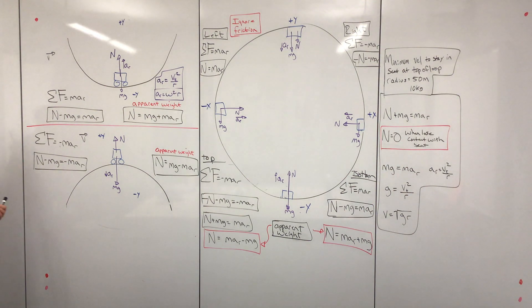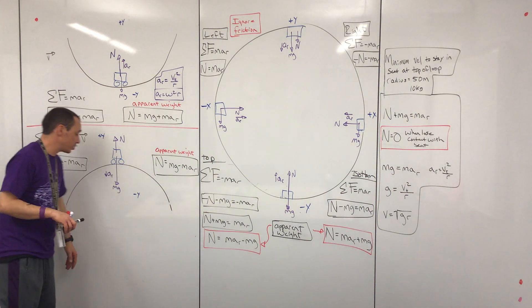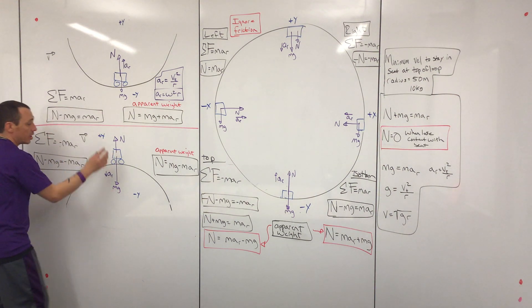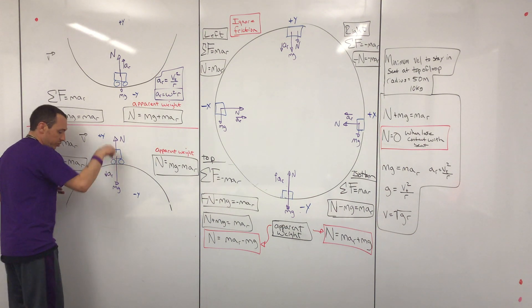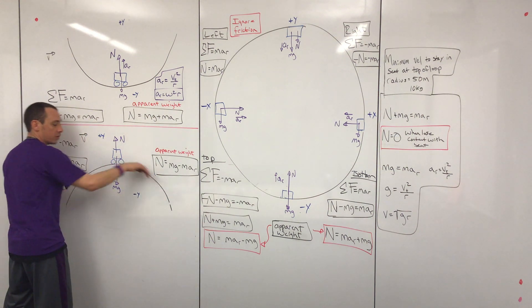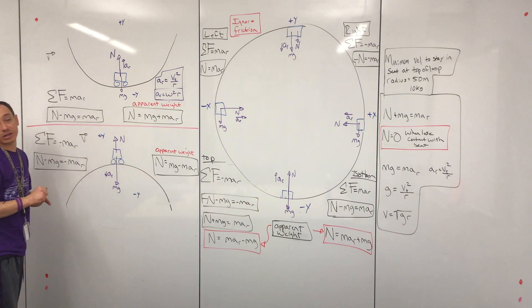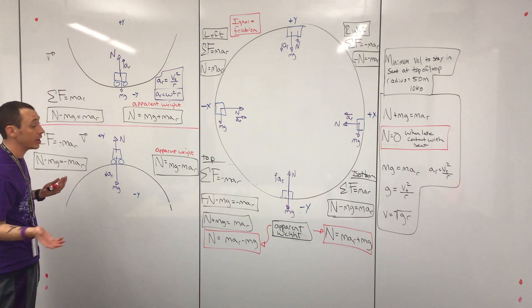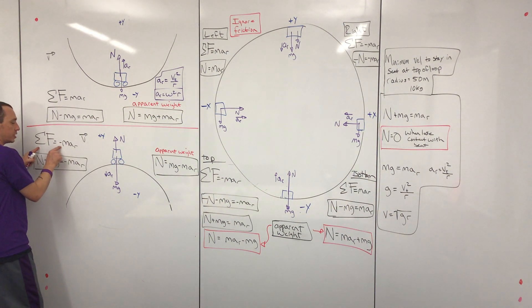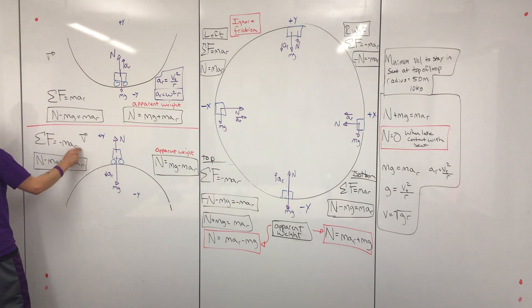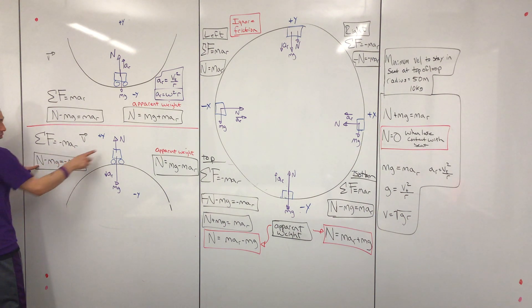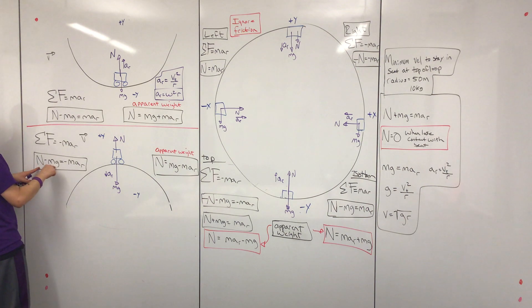Now moving to the hump situation — Newton's second law applies because the question asks us to describe the car in circular motion and draw a free body diagram and Newton equation. We draw the free body diagram: normal force is always perpendicular to the surface, weight is always directly down. Here the force towards the center of the circle is weight, so I draw weight longer. We write Newton's second law where radial acceleration is negative. I always fill in acceleration first, then fill in from my free body diagram.